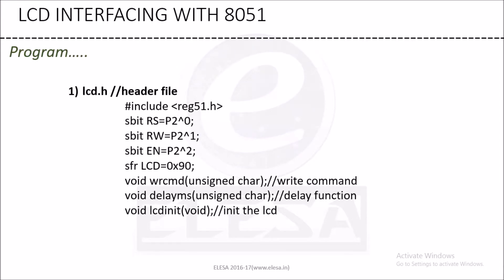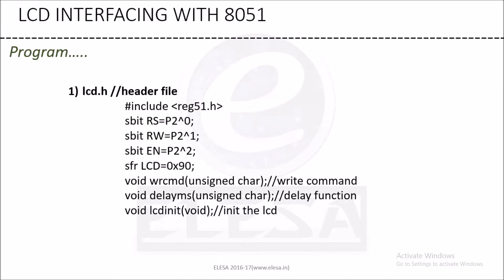First is LCD.h. In LCD.h, we declare sbit and some functions. The sbit is a data type which reserves only one bit. The function void wrcmd is for writing the command, void delayms is the delay function, and LCD_init is for initializing the LCD.